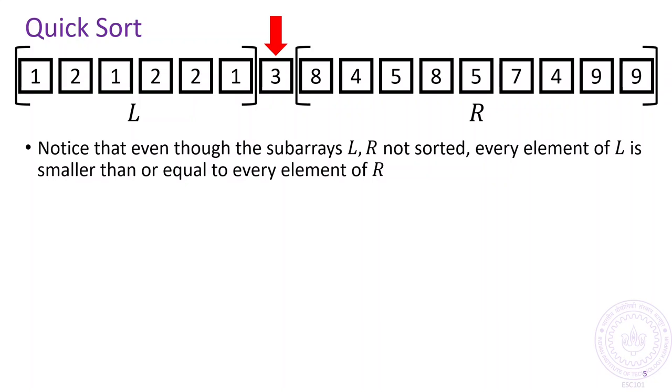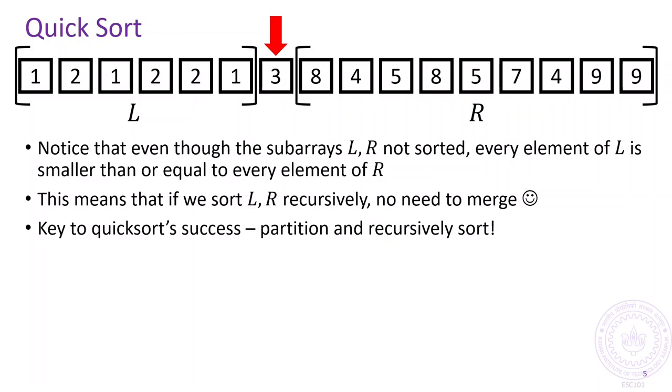Note that a side effect of partitioning is that every element of L is smaller than every element of R. This means that once we sort the arrays L and R recursively, there is no need to merge them. As we observed, this time saved on the merge step is key to quicksort speed.